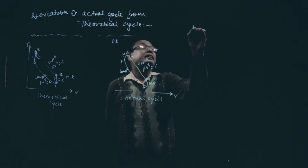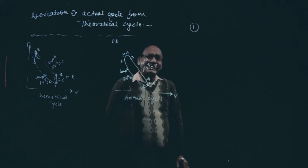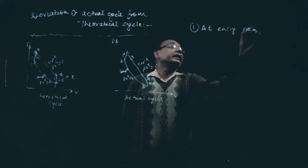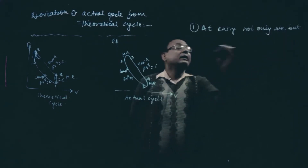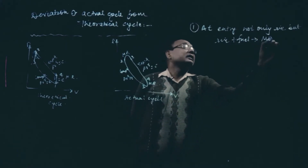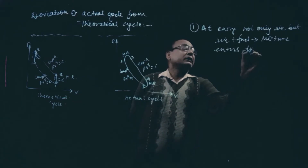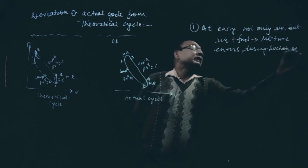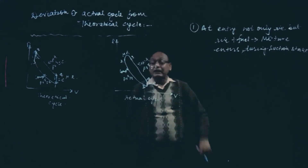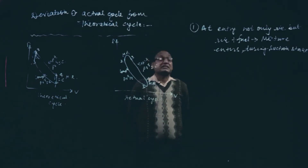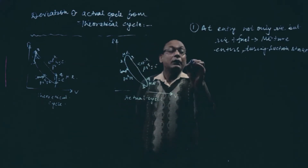Number 1: we have considered that only air enters, and the assumption was that it behaves like a perfect gas — that means it behaves like pure air. But at entry, not only air but air plus fuel, that is called the mixture, enters during the suction stroke. We assumed that only air enters into the cylinder during suction, but the actual condition is that air plus fuel mixture enters during the suction stroke. So that is one reason why this cycle takes place.